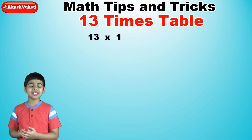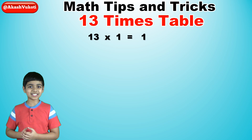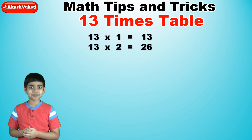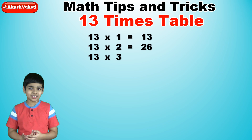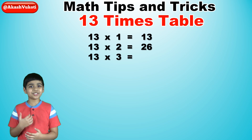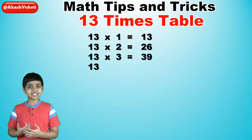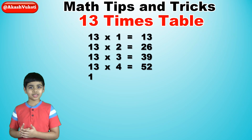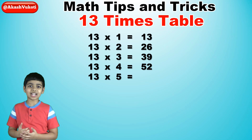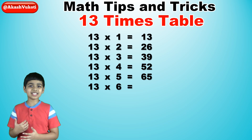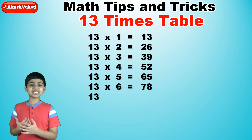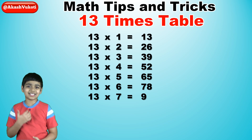13 times 1 is 13. 13 times 2 is 26. 13 times 3 is 39. 13 times 4 is 52. 13 times 5 is 65. 13 times 6 is 78.